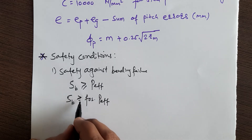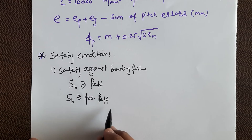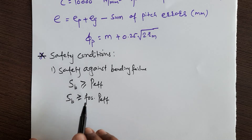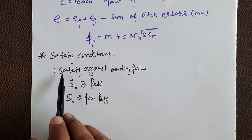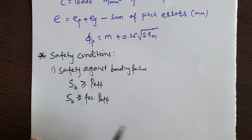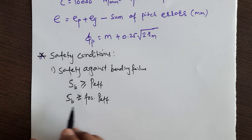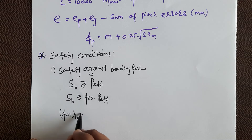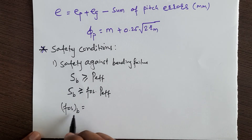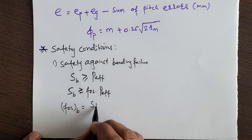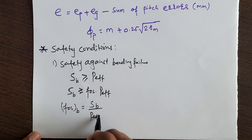So if beam strength is greater than or equal to the factor of safety into P effective, and this condition is satisfied, then your bevel gear is safe against bending failure. If you want to find the factor of safety against bending failure, it is SB divided by P effective.